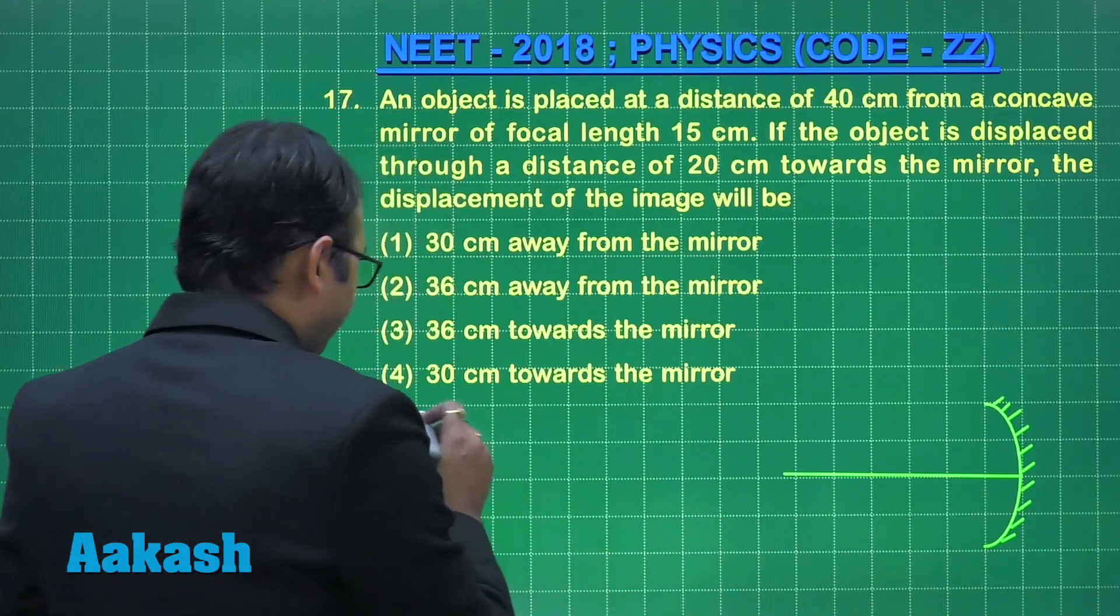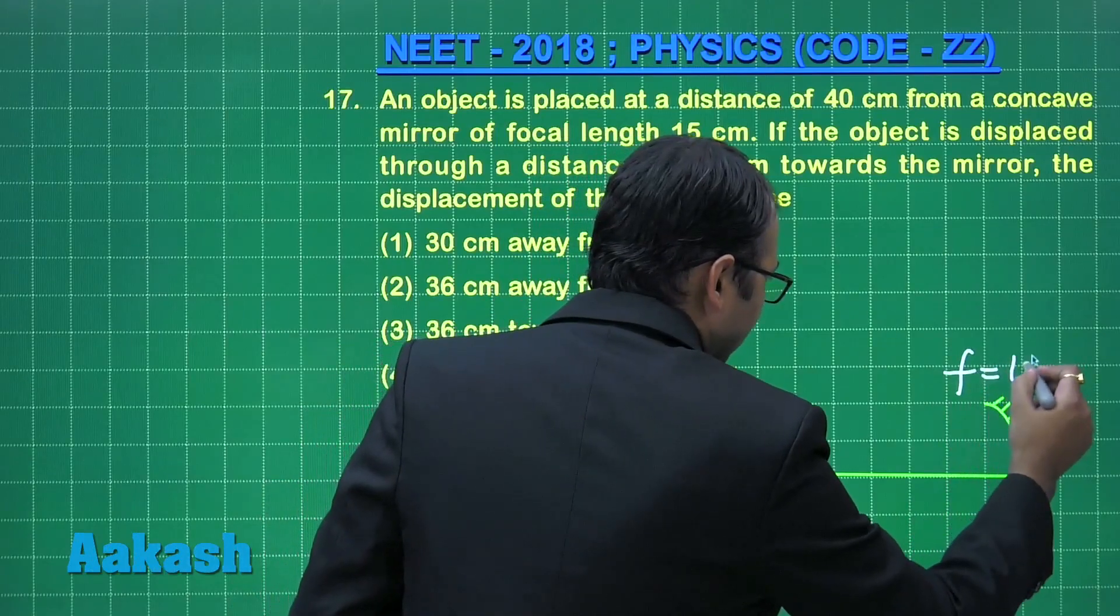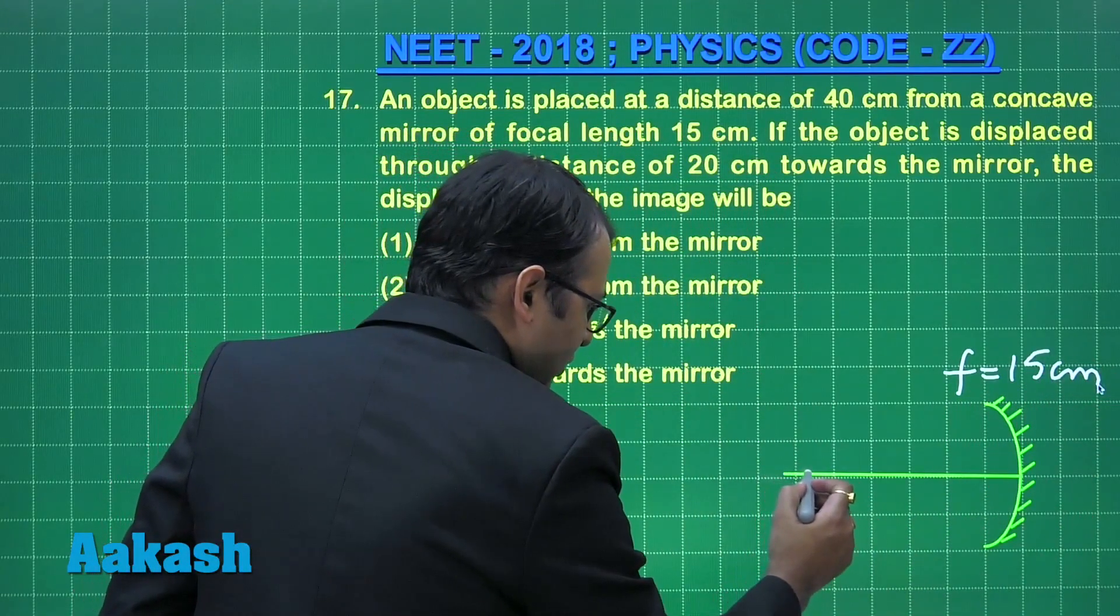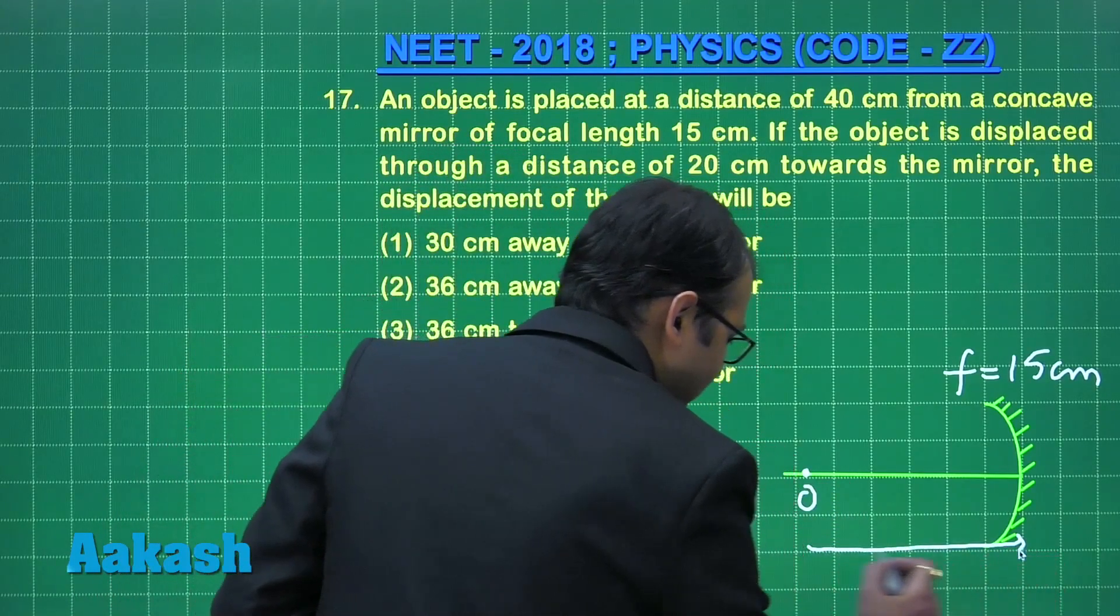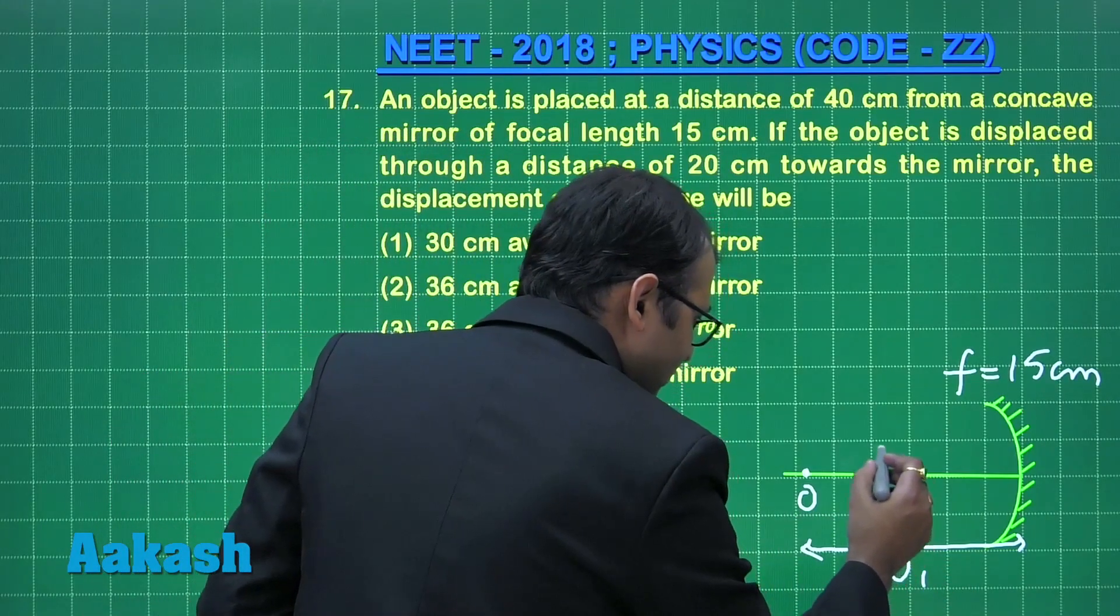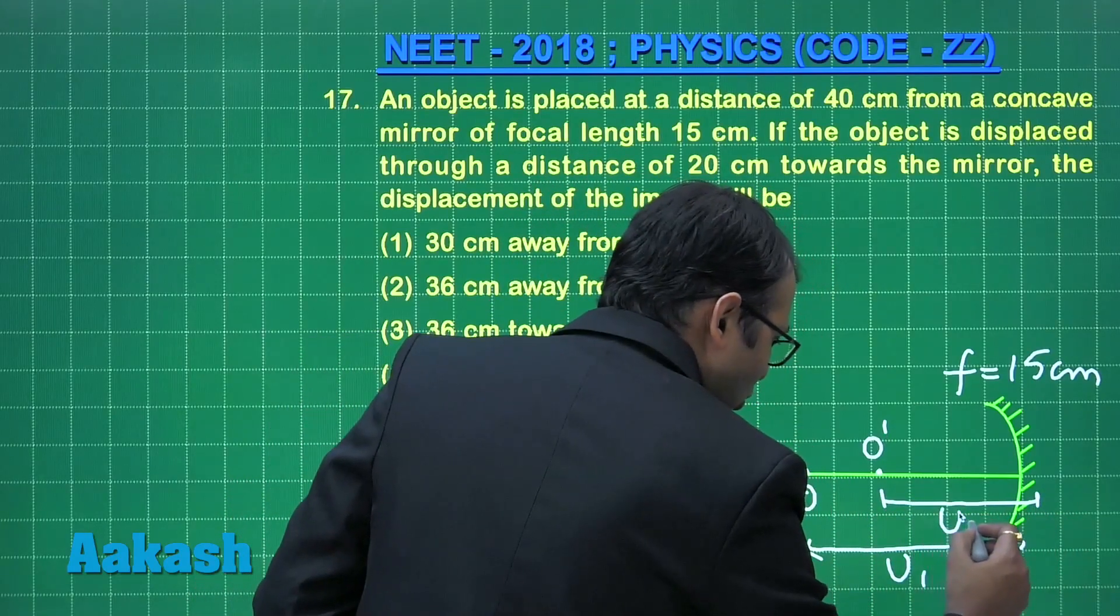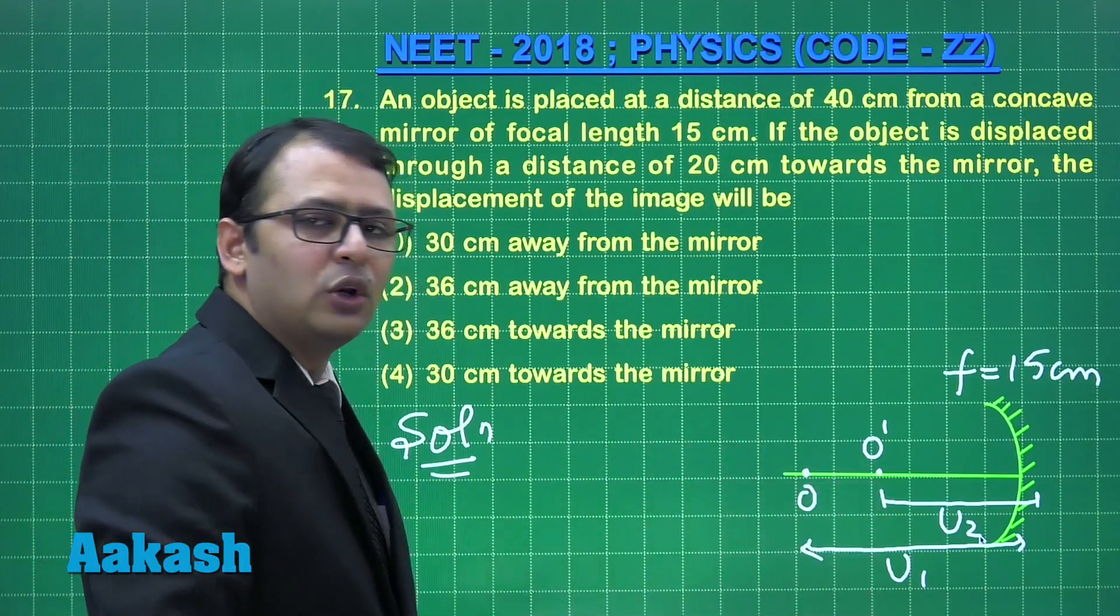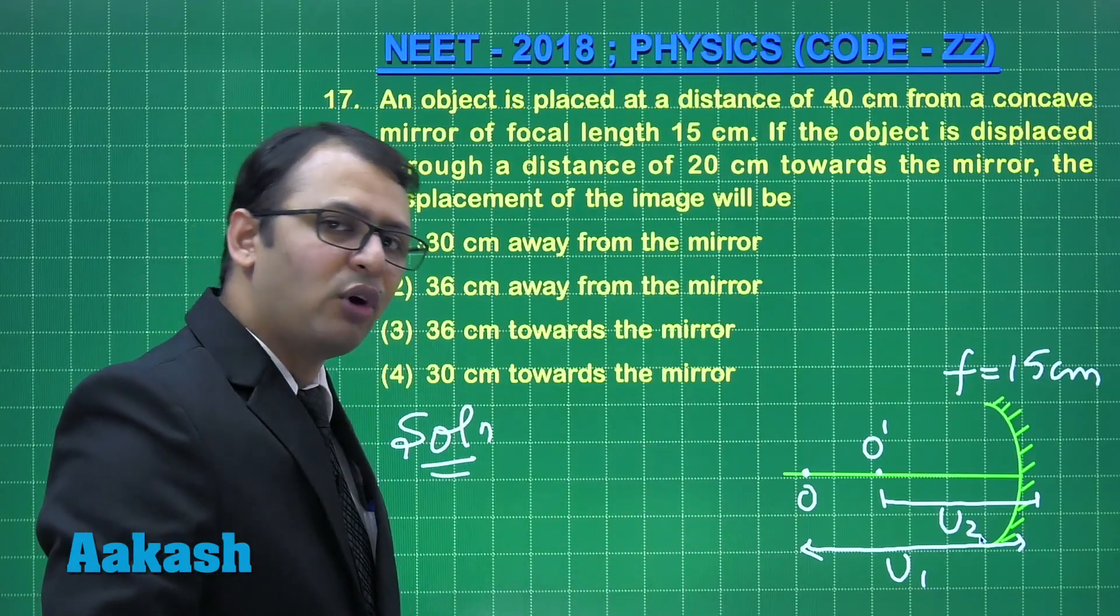So here we have a concave mirror of focal length 15 cm. Initially the object was somewhere here at distance u1, and then later on it was shifted towards the mirror at a distance u2. We have to find the image positions for both the locations and then we can see that image has shifted to which place and by what distance.